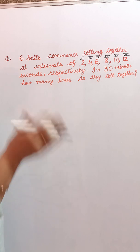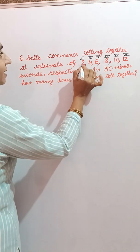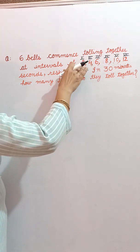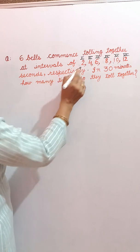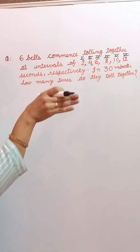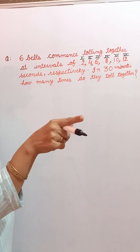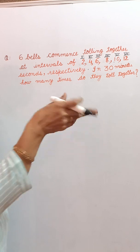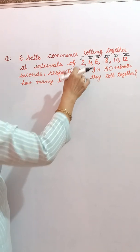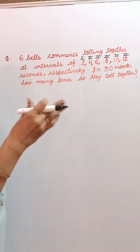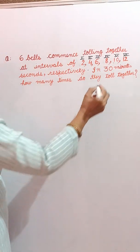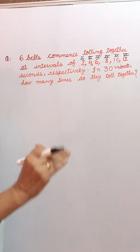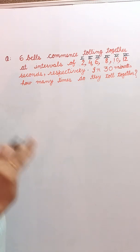Why LCM? Because the bells are tolling together at the multiples of their period. Like this bell will ring at two, four, six, eight — multiples of two. This bell will ring at four, eight, twelve seconds — multiples of four. So they are tolling together at the multiples of their periods. To find out at what time they will toll together, we have to find out the least common multiple, that is LCM.